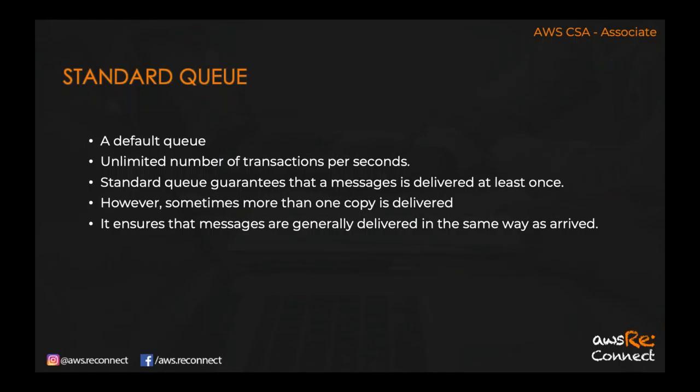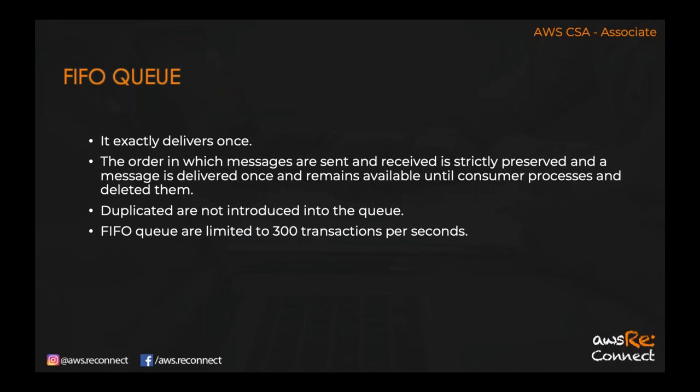Standard queue doesn't guarantee message delivery order — messages generally arrive in order but there may be some jumbling. With the FIFO queue, messages are delivered exactly once (no duplication) and the order in which messages are sent and received is strictly preserved. Messages remain available until the consumer processes and deletes them. FIFO queues are limited to 300 transactions per second, whereas standard queues support unlimited transactions per second.